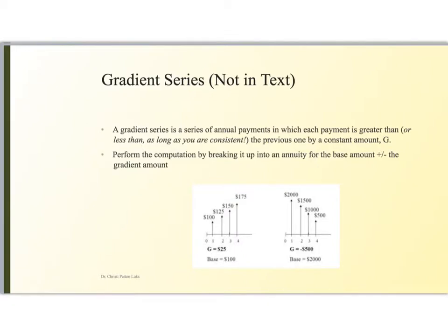The way that we're going to do this is we're going to break this up into a base amount, or the annuity, so $100 for instance here, and then there's growth here of $25 each time you make another payment. So the base amount is the annuity amount, 100, and then we have a growth, or a gradient, of $25 per time period.